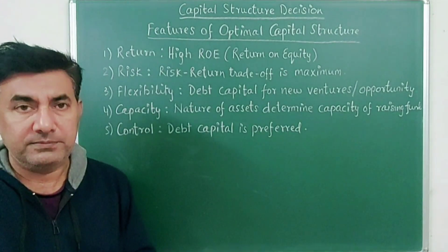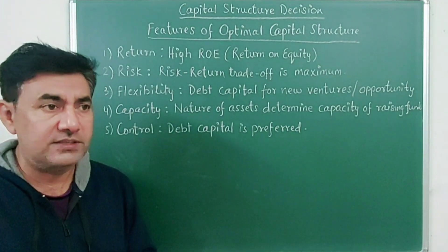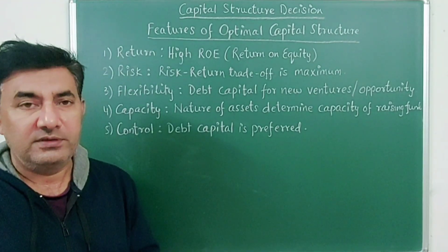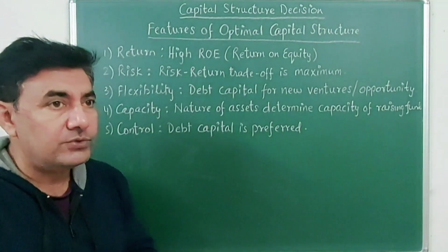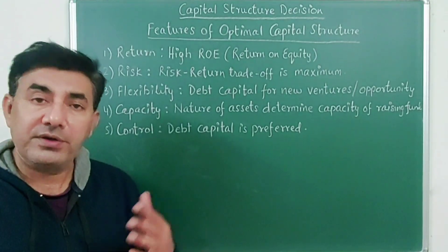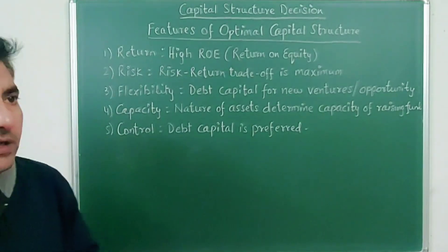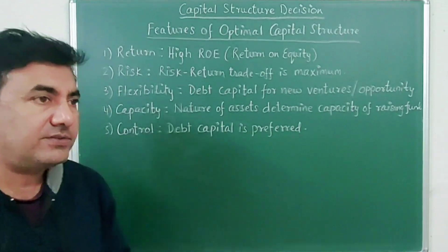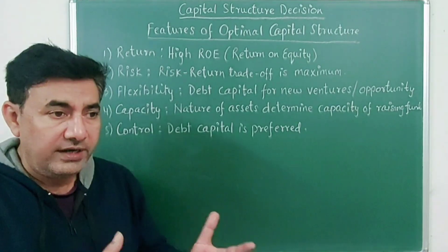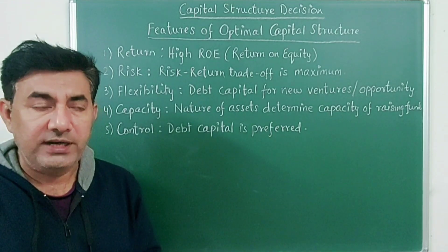The second feature is risk. The risk-return trade-off should be maximum. Higher the risk, higher will be the return — that is the principle. Any source of raising funds which carries more risk will pay a good return. The third feature is flexibility, meaning the company can easily raise funds to invest in new opportunities and new ventures, which is why debt capital is generally more preferable.